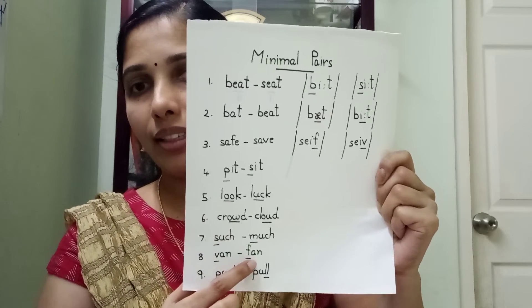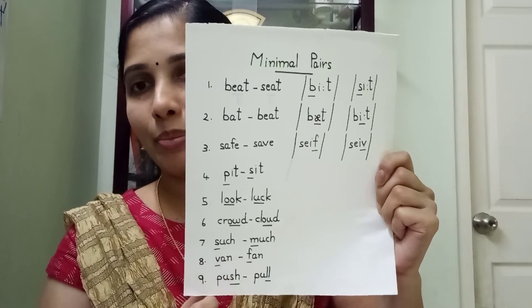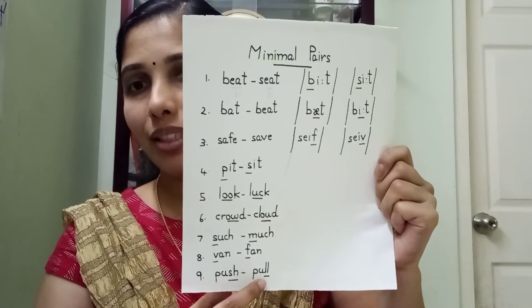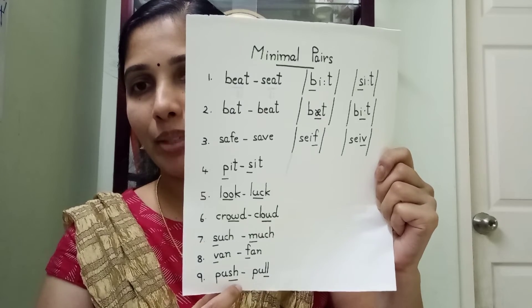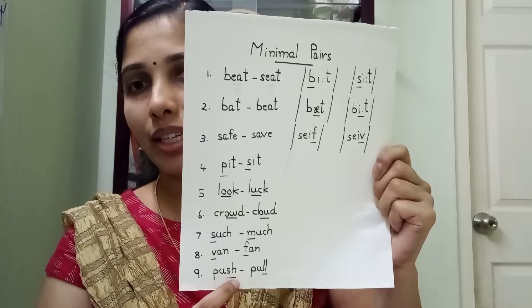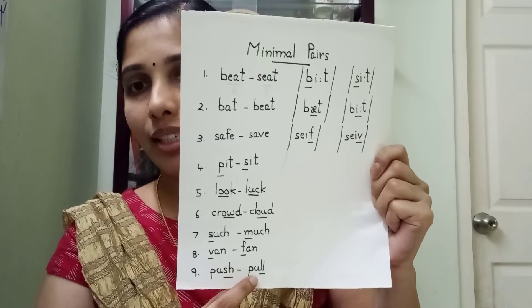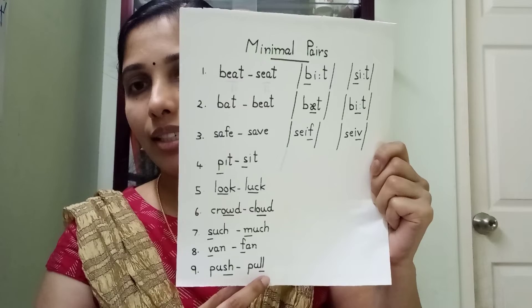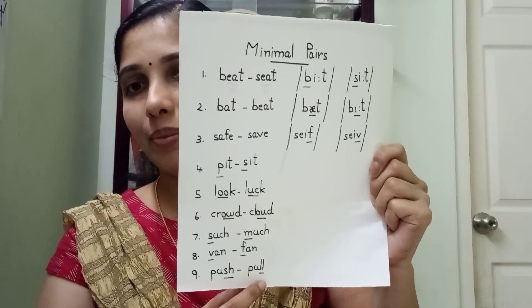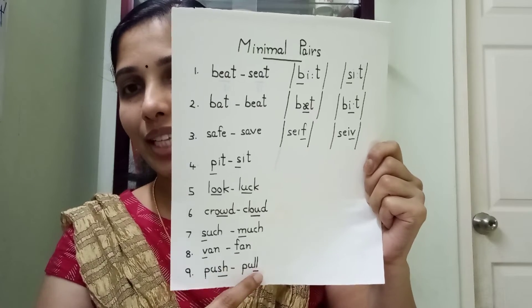Van and fan — the initial sounds differ. Push and pull — the final sounds differ. So these are examples of minimal pairs where changing one sound produces a different word.